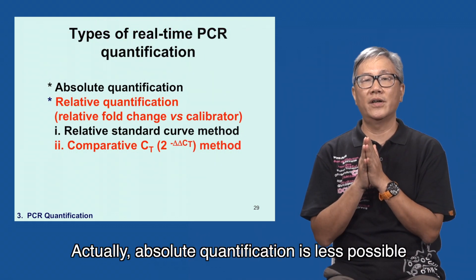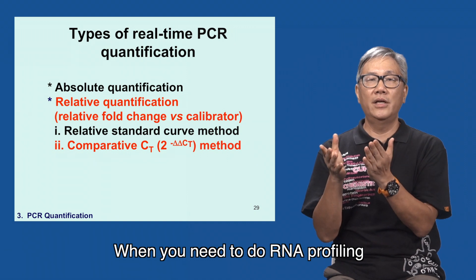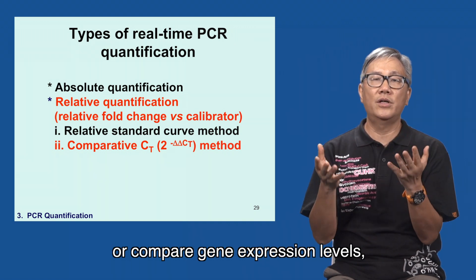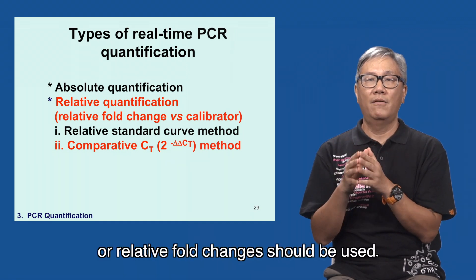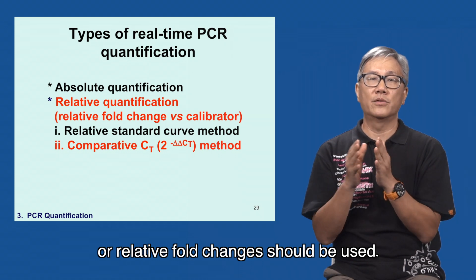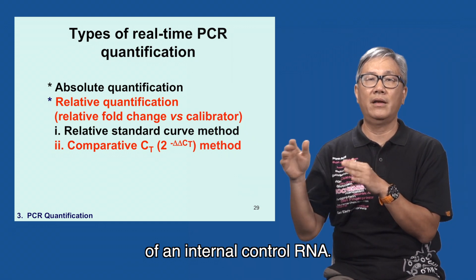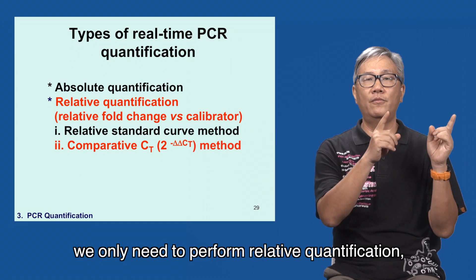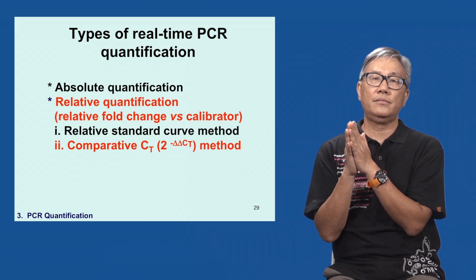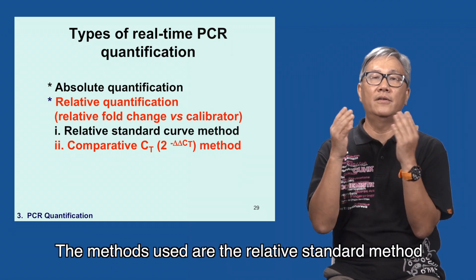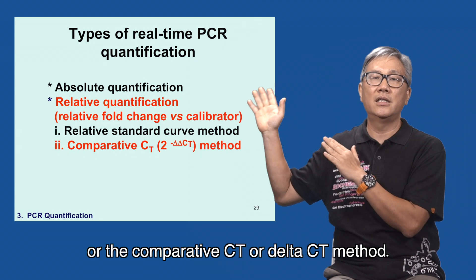Actually, absolute quantification is less possible, if not impossible, when you need to do RNA profiling or compare gene expression levels. Perhaps relative quantification or relative fold changes should be used. Relative means relative to the level of an internal control RNA. You only need to perform relative quantification and standard curves are not needed. The methods used are the relative standard method or the comparative CT, or delta-CT method.